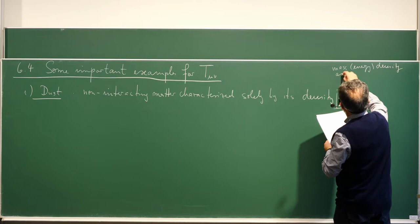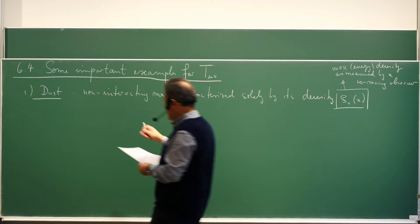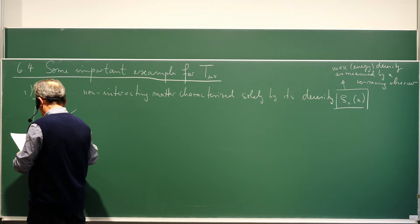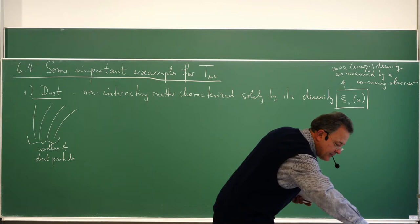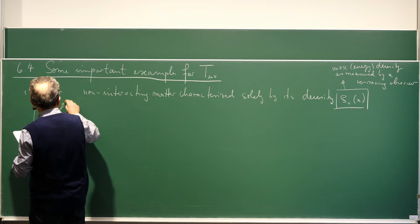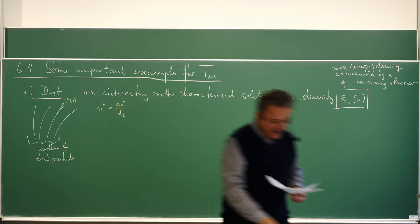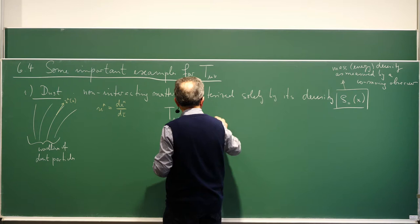We imagine the world lines of dust particles — many of those. To each world line, at every point, we can associate a four-velocity vector u^μ(x), where u^μ = dx^μ/dτ. For this case, the energy-momentum tensor has the simple form T^μν = ρ₀ u^μ u^ν.